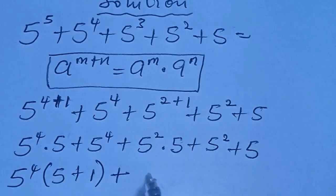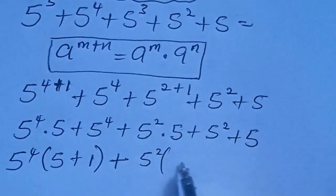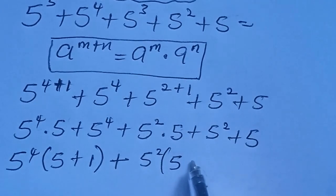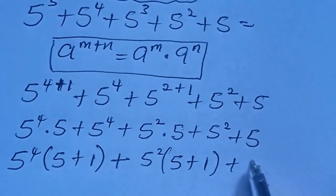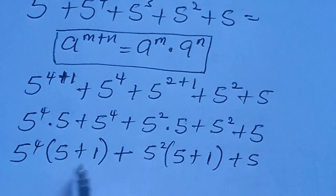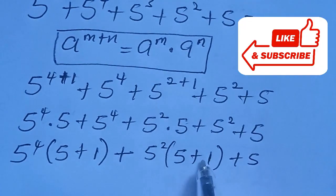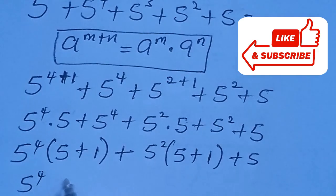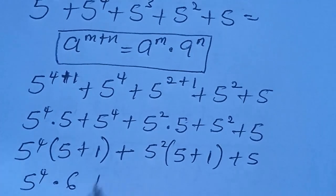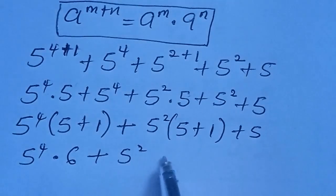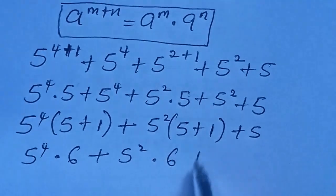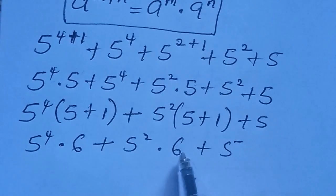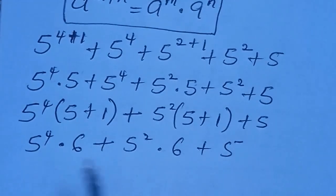After factoring, we have 5 to the power of 4 into bracket (5 plus 1), close bracket, plus 5 to the power of 2 into bracket (5 plus 1), close bracket, plus 5. We can now add what we have in each bracket: 5 plus 1 gives 6. So we get 5 to the power of 4 multiplied by 6, plus 5 to the power of 2 multiplied by 6, plus 5.